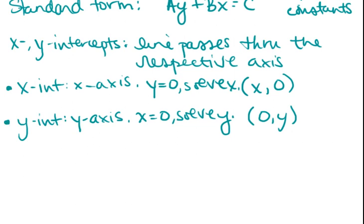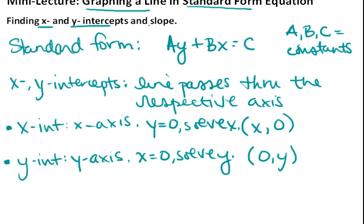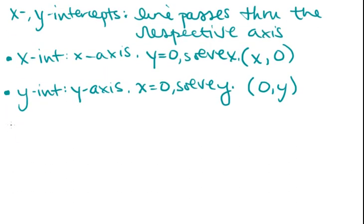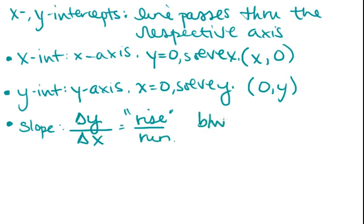Also, there was another term up here that was important, and that was slope. Slope is defined as the change in the vertical direction, y, over the change in the horizontal direction, x, or you might be familiar with rise over run. This is between two points on the line.